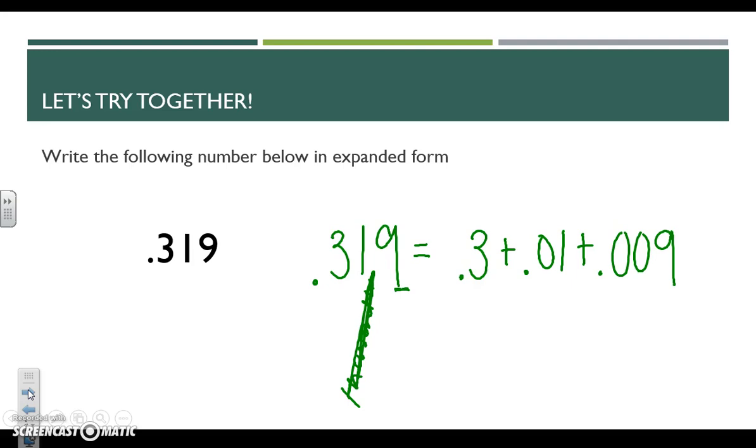We have one zero to hold our place value for hundredths, two zeros to hold our place value for thousandths, so we have our number in the right spot. And then again, we don't need a zero for working with tenths because it is at the start, right to the right of the decimal.